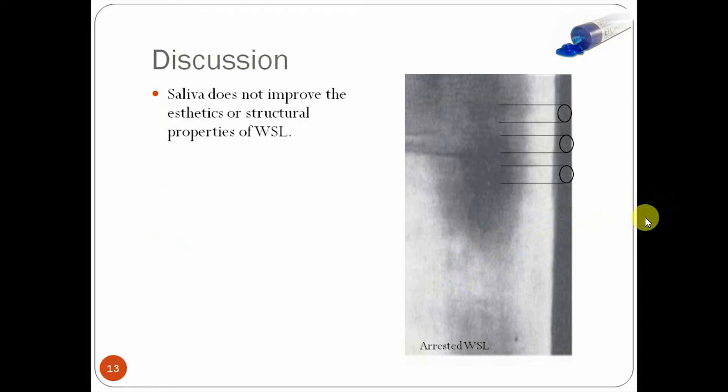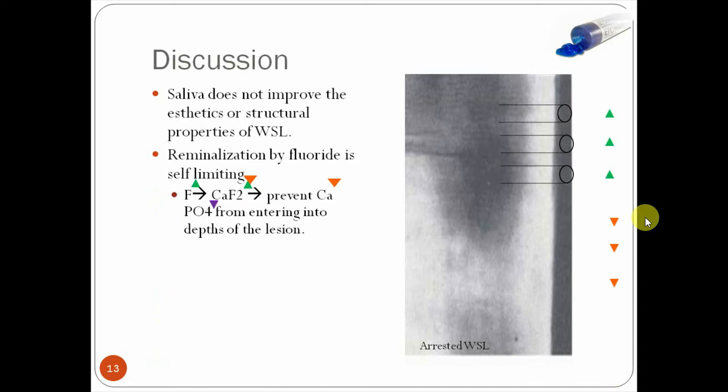So for the discussion, we see that we already know saliva doesn't improve the arrested white spot lesion. No patient comes in and says otherwise we wouldn't have patients in the chair asking for treatment. So remineralization by fluoride is self-limiting, and I want to explain what that means. When you have fluoride, it connects, it bonds with the calcium fluoride, and this can basically clog up those pores, which makes it difficult for calcium and fluoride to get in. So as you can see, the calcium and fluoride are not getting into the white spot lesion, to the depths. So acid etching might be able to remove those plugs, and therefore the calcium and fluoride can get in.